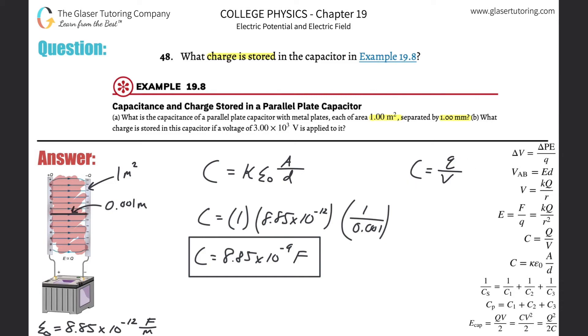To solve for Q, simply cross multiply: it's the capacitance times the voltage. Now plug in those values: 8.85 times 10 to the minus ninth multiplied by 3000 volts. That gives us 2.66 times 10 to the minus fifth coulombs.